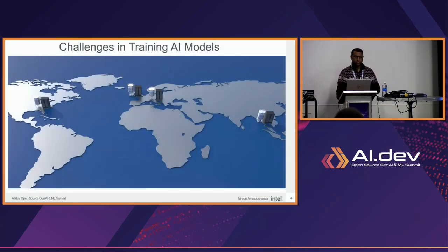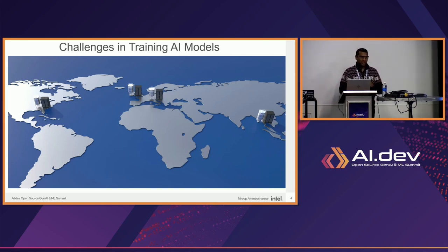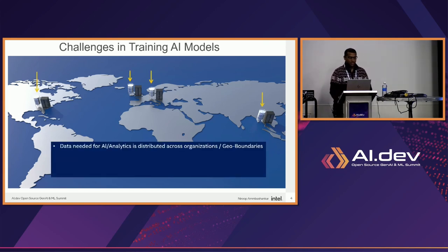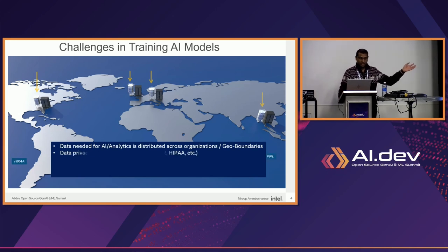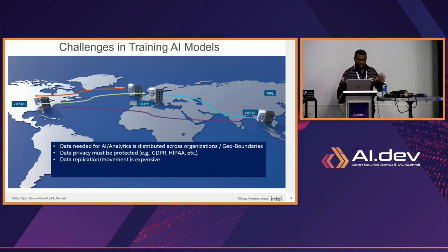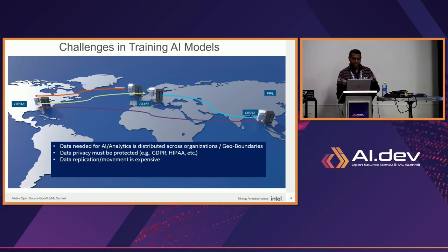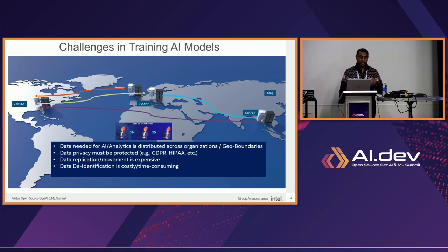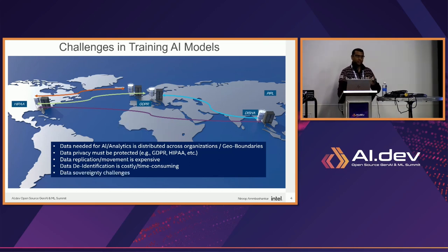AI needs data, and the issue arises in healthcare, finance, IoT, and many other domains. Getting this data has a lot of challenges. Most of this data is distributed across organizations, each with its own rules for sharing. Most of it is across boundaries — in healthcare specifically, you have HIPAA compliance, GDPR, and all these regulations — so data replication or movement across countries or organizations is generally very hard.